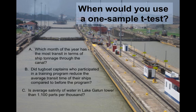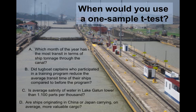You have two more possibilities. Is the average salinity of water in Lake Gatun, which is the lake that is part of the Panama Canal, lower than 1,100 parts per thousand? And then D, are ships originating in China or Japan carrying, on average, more valuable cargo? Which of these four questions, if any, would you use a one-sample t-test for?